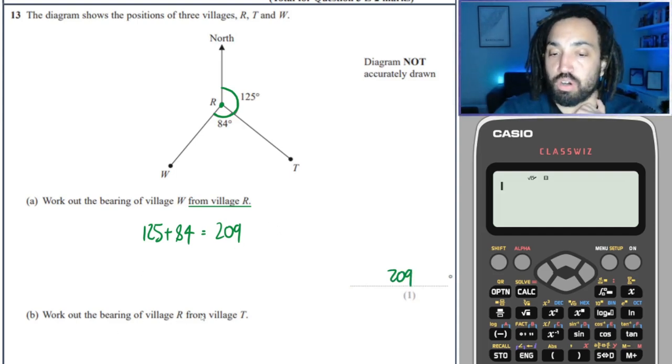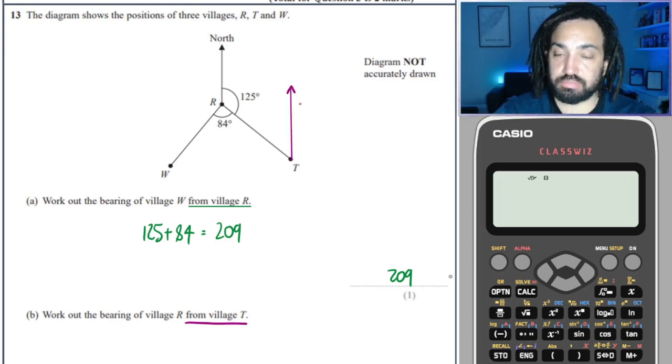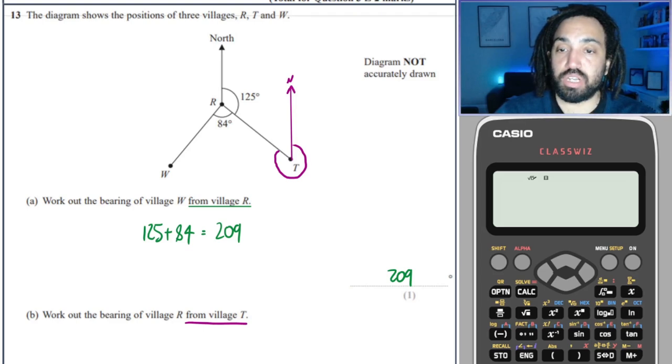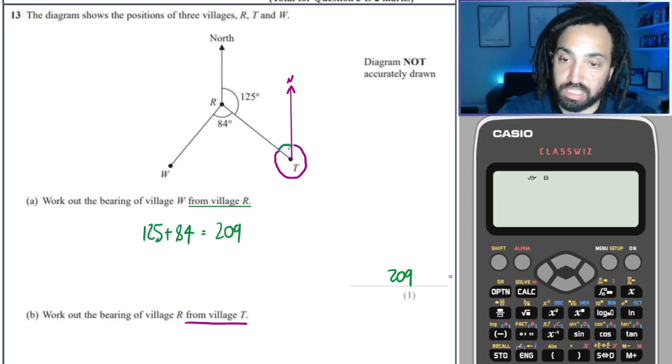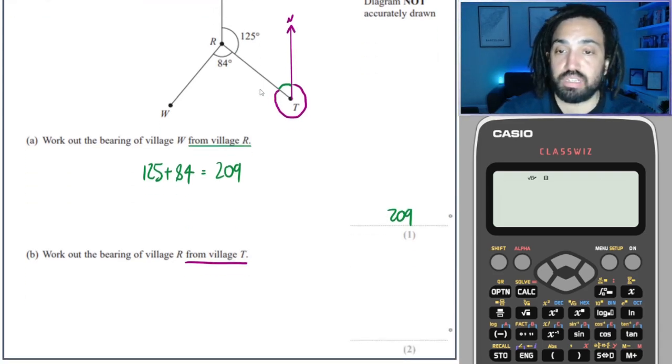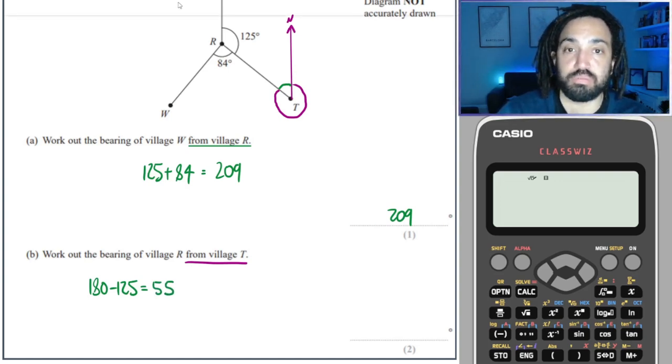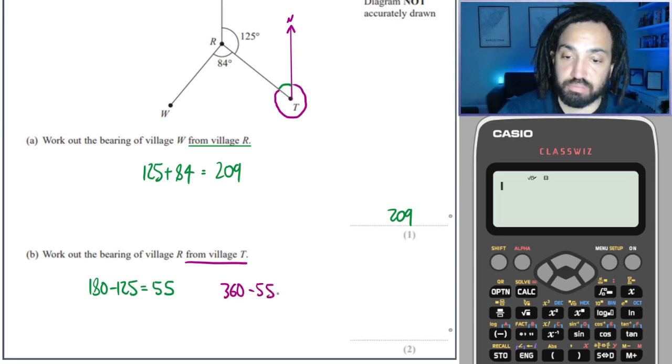Okay, work out the bearing of R from T. Well that means I need to draw a north line at T, because once again, it's always where we're coming from is where we start. So I draw a north line at T, and then I go around, always clockwise, until I get to the line which has R on, which is that line there, so it's that angle that I'm looking for. Well, I can't figure that one out directly. I need to find first the green angle inside here. We know that that's co-interior with 125, because both of these two lines here are north lines, so the angles in between them here add to 180. So I just do 180 minus 125, which is equal to 55. And then to find the purple angle, which is the one I'm looking for, I do 360 minus 55, which is 305.